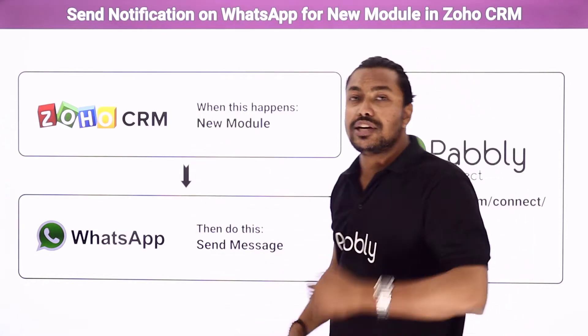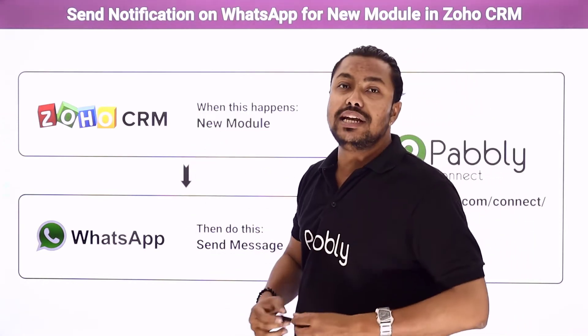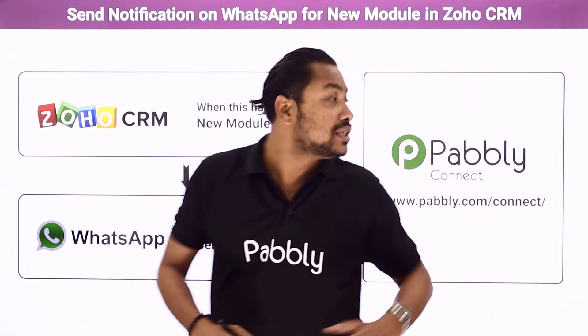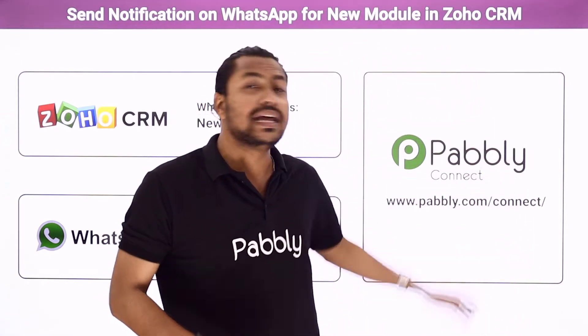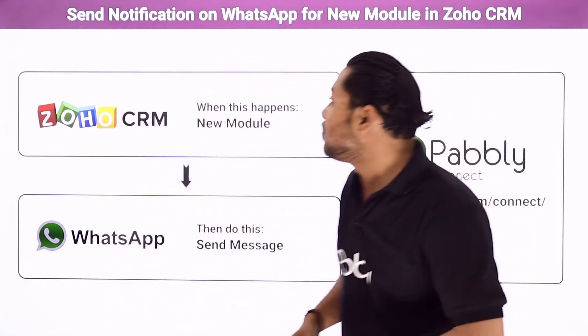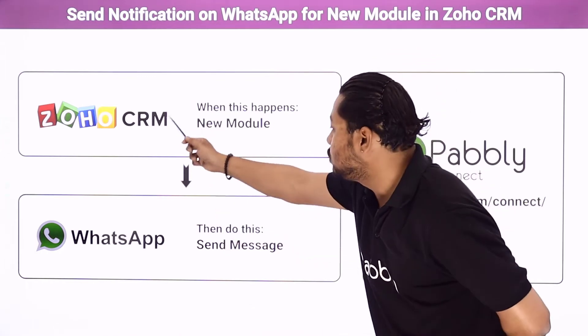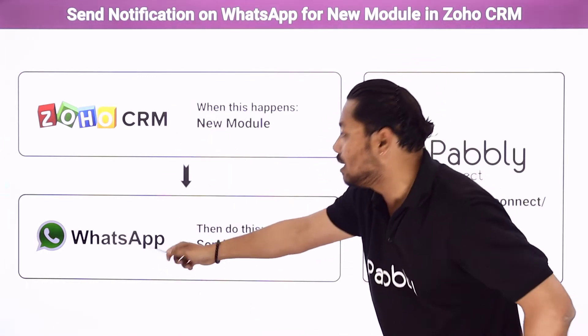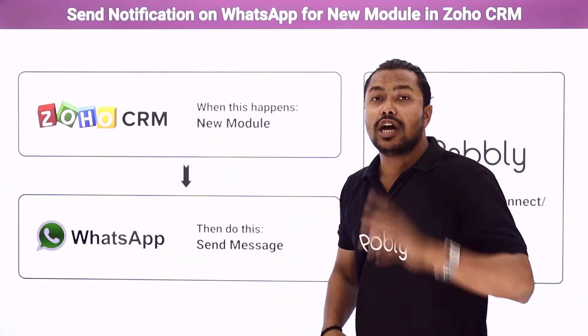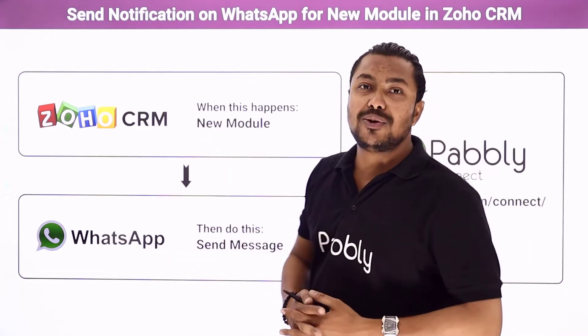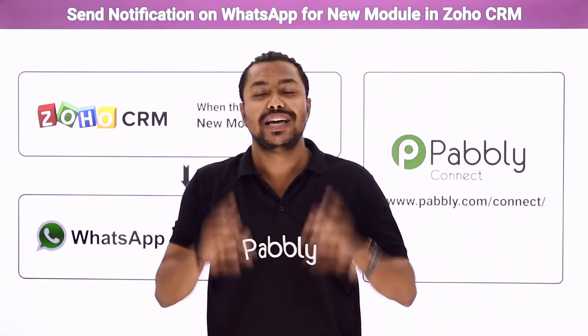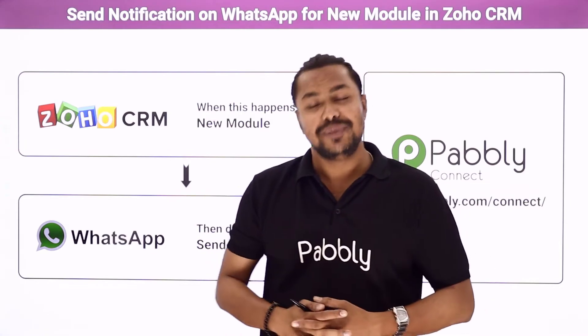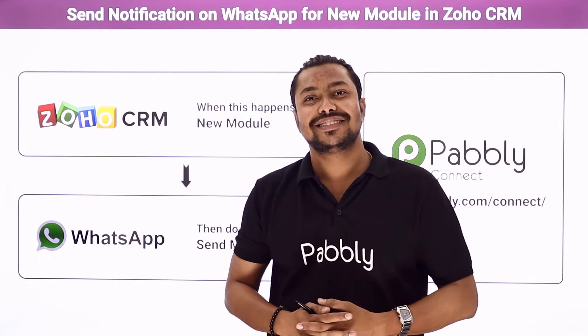Now to do this automation, we are going to use an integration and automation service — Pabbly Connect — which will help us connect Zoho CRM and WhatsApp together. If you want to learn how to do this automation, you have to come with me to the screen.